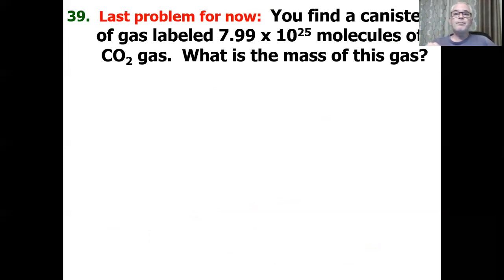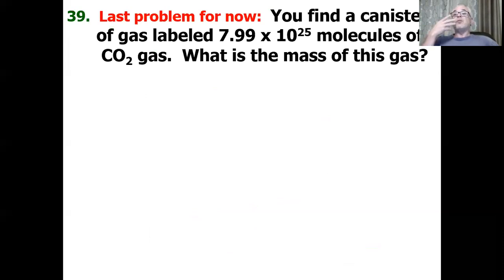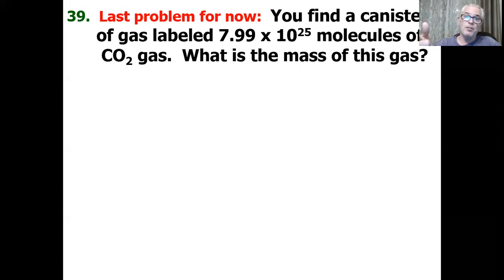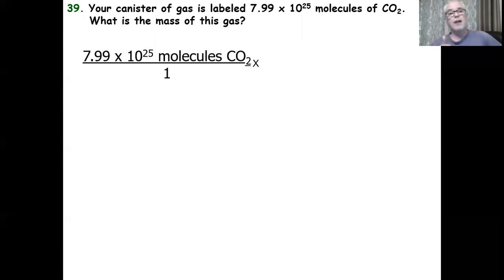This is the last problem. You find a gas canister containing 7.99 times 10 to the 25th molecules of carbon dioxide. What's the mass in grams? 10 to the 25th is a hundred times bigger than a mole — this is a lot of gas. We're starting at Particle Island and need to get to Mass Island. First step: convert particles to moles; second step: convert moles to mass.